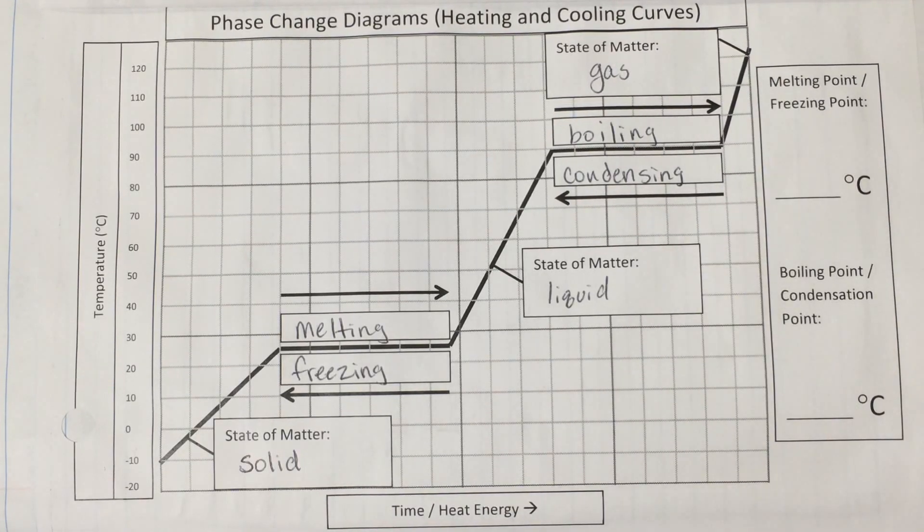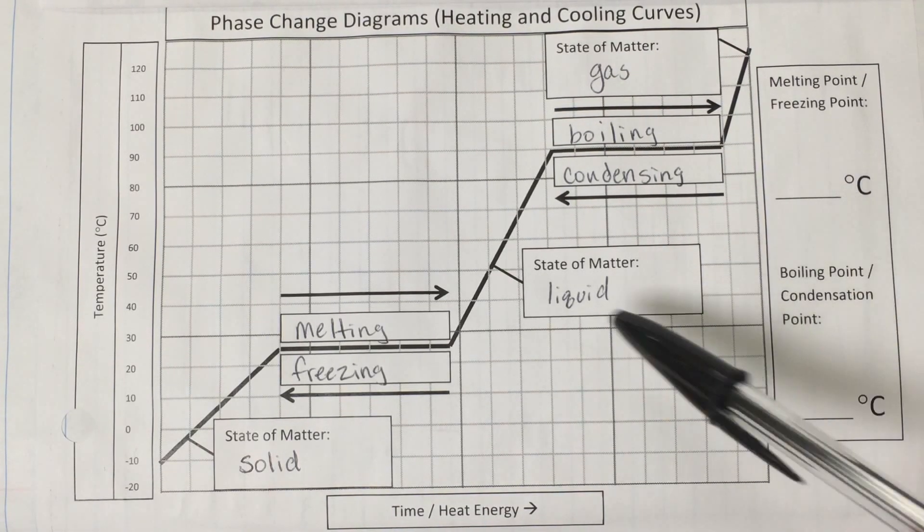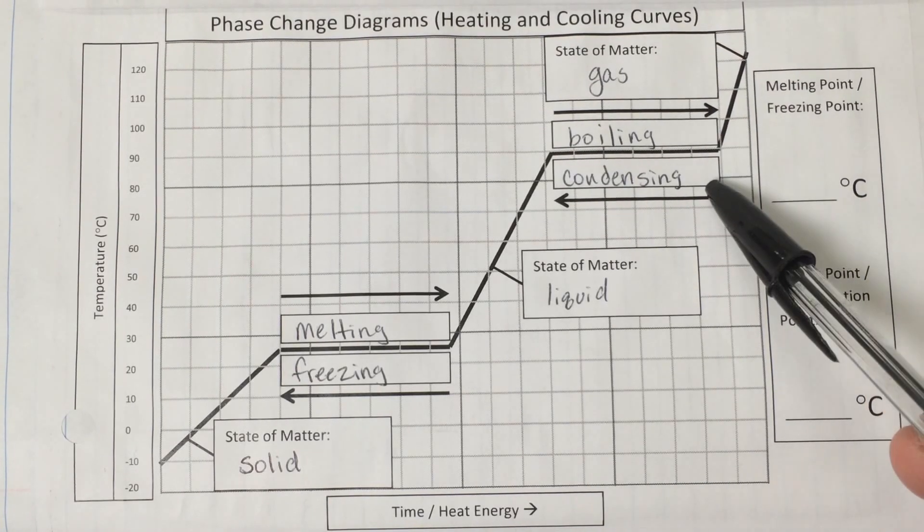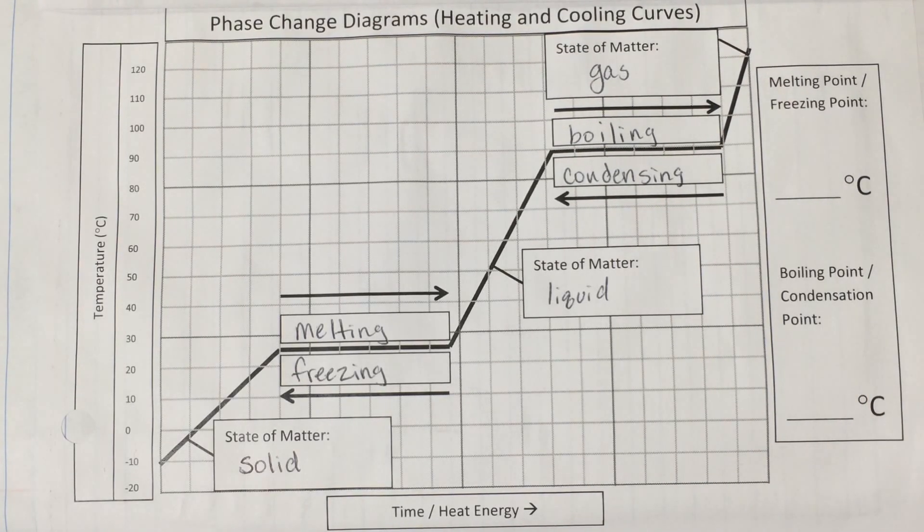So this is a phase change diagram, we can identify the melting and freezing point on here, as well as the boiling and condensing point, and I'm going to let you all do that on your own.